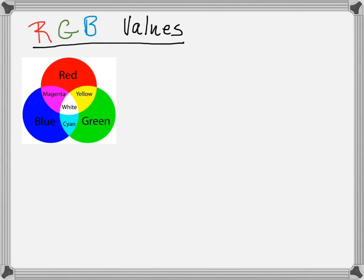When you look at your screen you see colors and images, and this gives a good experience for your work on the computer. But how are these colors and images generated?